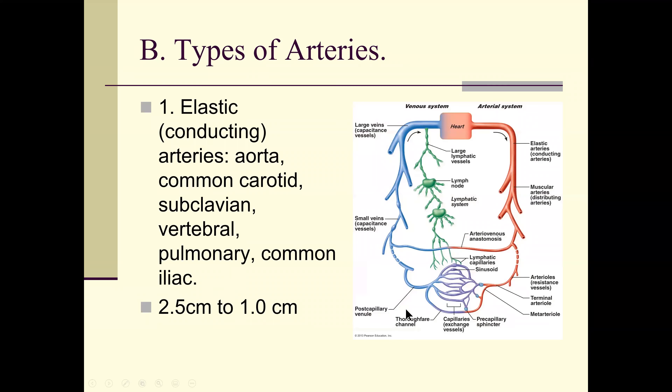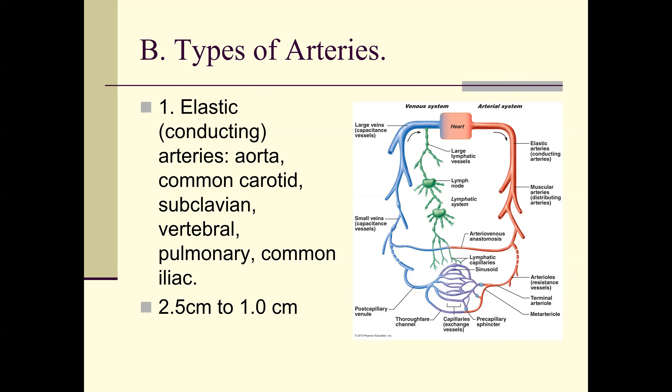Types of arteries: we have elastic arteries, which are conducting arteries. When that pulse comes out of the heart, it's a pressure pulse of blood — the ventricles contract, overcome the pressure outside the aortic and pulmonic valves, and a pulse of blood comes out. If the vessel were rigid, it could not contain that pulse — the huge pressure pulse would be transmitted further down.